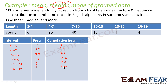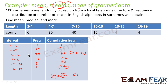The next step is to find n/2. Since n = 100, n/2 = 50. Looking at the cumulative frequency column, 50 falls in the bracket with cumulative frequency 36 to 76, so the class 7–10 is the median class.